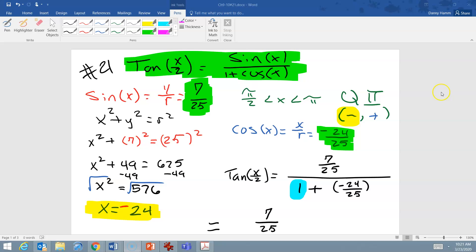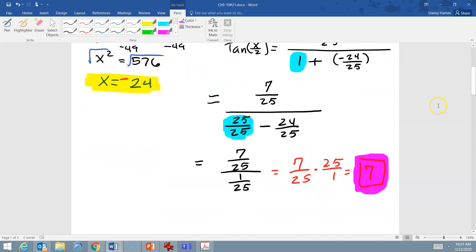Now we're just simplifying this complex fraction, and in doing so, we need to change 1 so that we have a common denominator of 25. So that becomes 25 over 25, highlighted in blue.